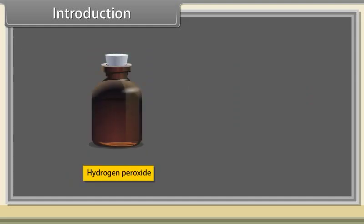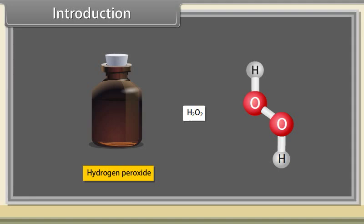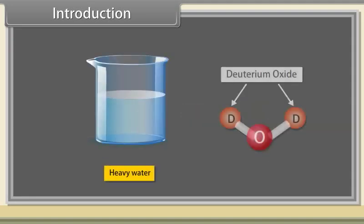It contains one oxygen atom and two hydrogen atoms. Hydrogen peroxide is a combination of hydrogen and oxygen with the chemical formula H2O2. Heavy water is a deuterium oxide, another form of water which contains the hydrogen deuterium isotope.